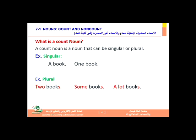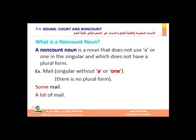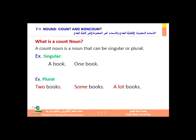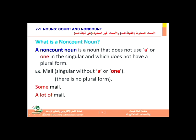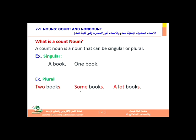As a simple idea: a count noun is a noun that can be singular or plural. If the noun can come in the plural, we call it a count noun. For example, the word 'book' can be singular — one book — but it can also come in the plural: two books, some books, a lot of books. So if the noun can be singular and plural, it is a count noun.